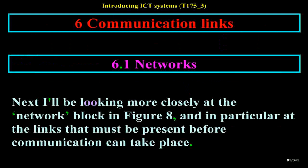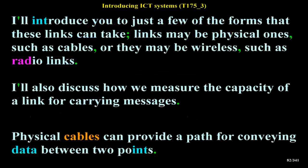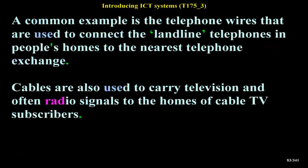Next I'll be looking more closely at the network block in Figure 8, and in particular at the links that must be present before communication can take place. Links may be physical ones, such as cables, or they may be wireless, such as radio links. Physical cables can provide a path for conveying data between two points. A common example is the telephone wires used to connect landline telephones in people's homes to the nearest telephone exchange.